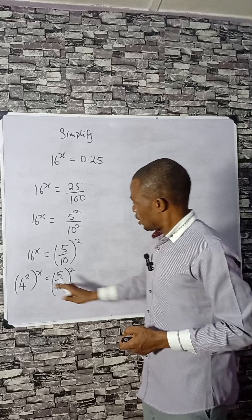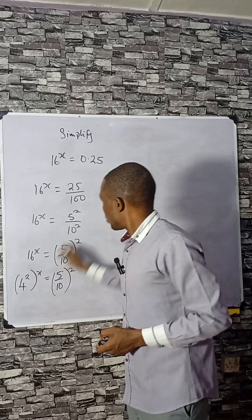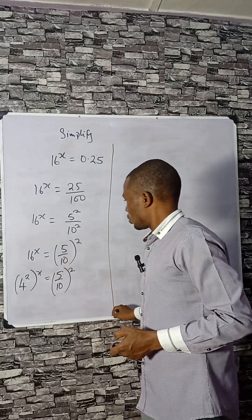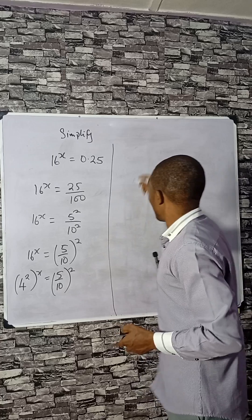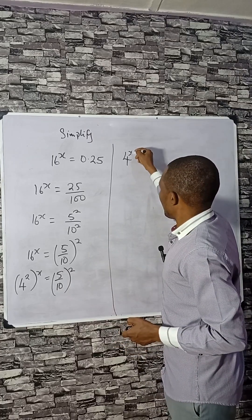The laws of indices permit us to interchange the powers, so we can take x in and take 2 out. That would give us 4 to the power 2x.